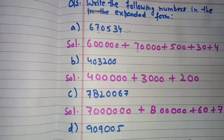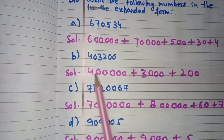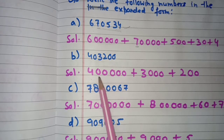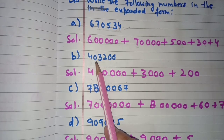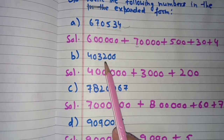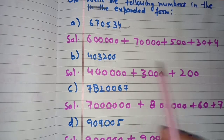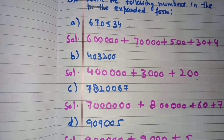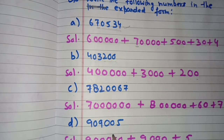Part B is 4,03,200. The first digit 4 has 5 digits after it, so its place value is 4,00,000 (four lakh). Zero is skipped. Three has 3 digits after it, so its place value is 3,000. Two has 2 digits after it, so its place value is 200. The expanded form is: 4,00,000 + 3,000 + 200.